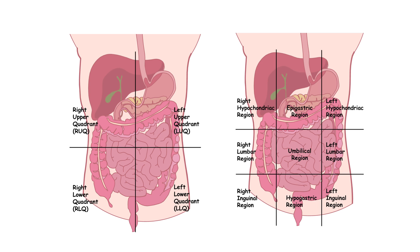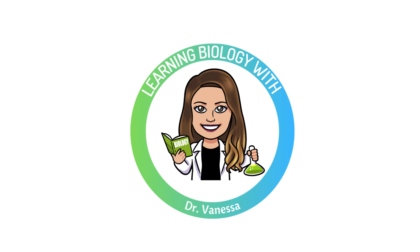The four quadrants give us a fast and practical way to describe general location — perfect for things like emergency medicine or physical exams. The nine regions give us a more precise map, ideal for surgical anatomy, diagnostics, and understanding how organs relate to one another. Knowing these divisions helps us speak the same language, whether you're reading a textbook, interpreting a scan, or working alongside healthcare professionals.